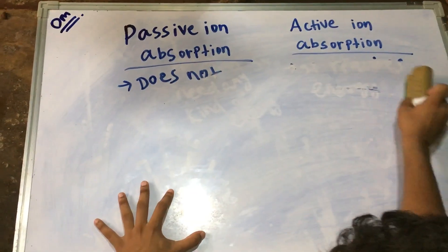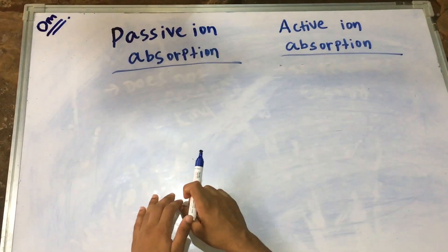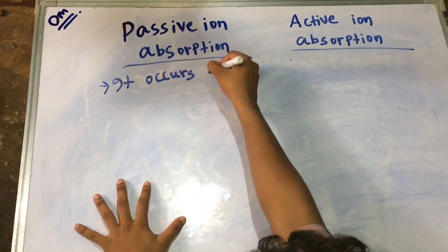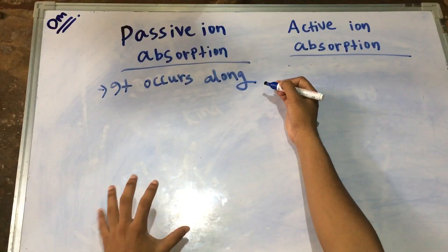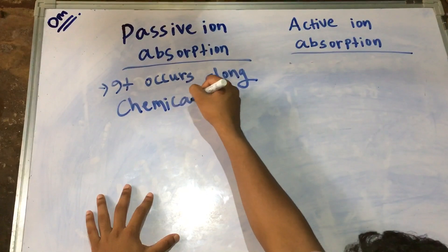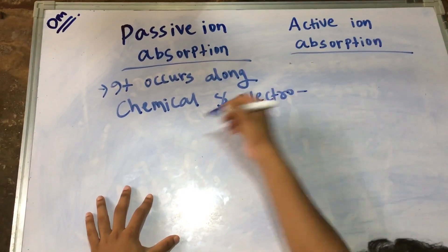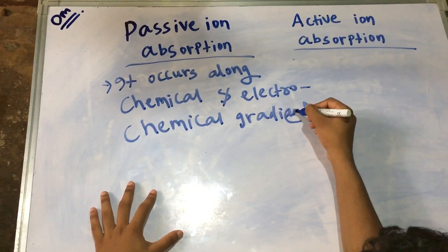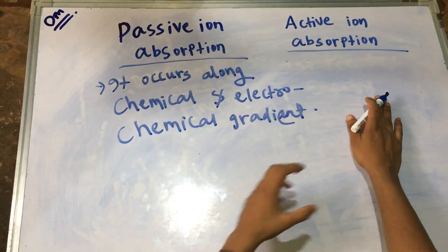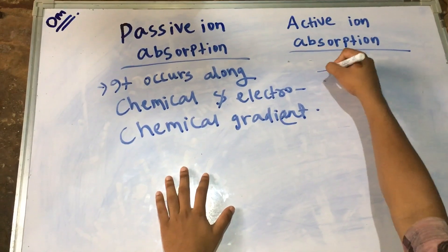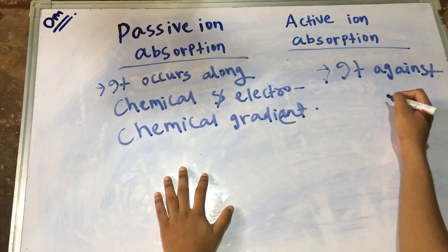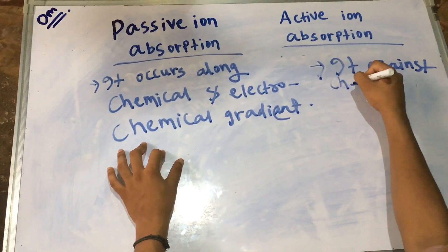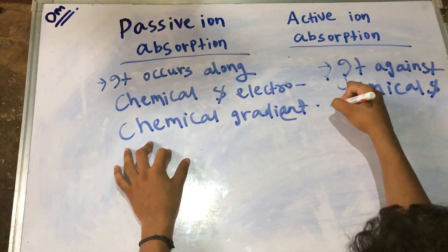The second point between active and passive ion absorption is that passive ion absorption occurs along chemical and electrochemical gradients, but active ion absorption is against the chemical and electrochemical gradients.